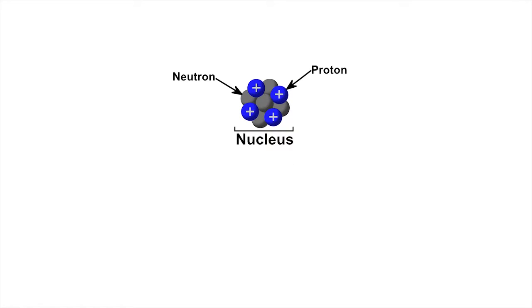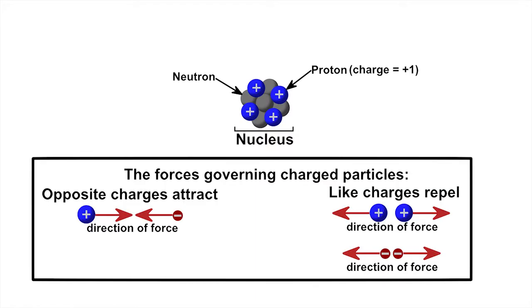Most nuclei have more than one proton crammed into a very small space. The problem with this is that each of these protons has a positive charge. The way that the forces governing charged particles work is that opposite charges attract, but like charges repel each other. So the protons in the nucleus experience strong electrostatic forces of repulsion, trying to push them apart.